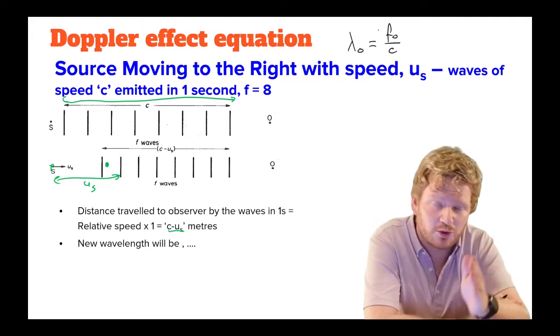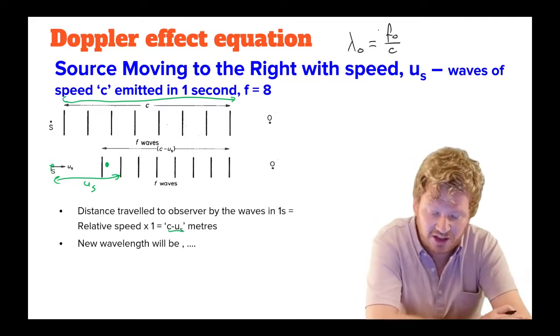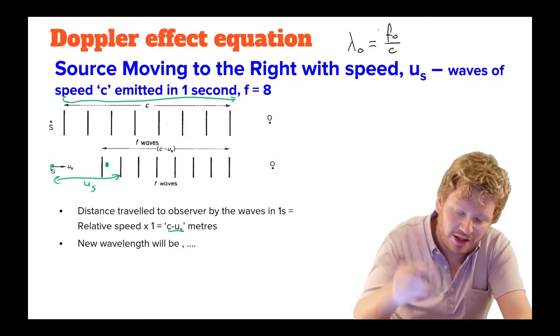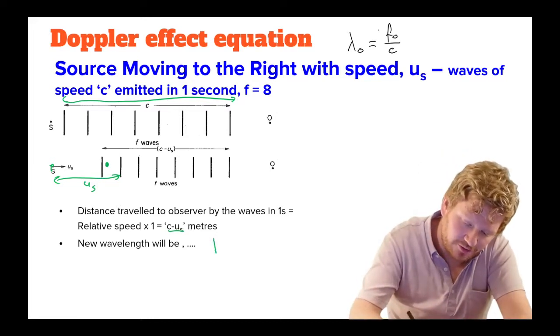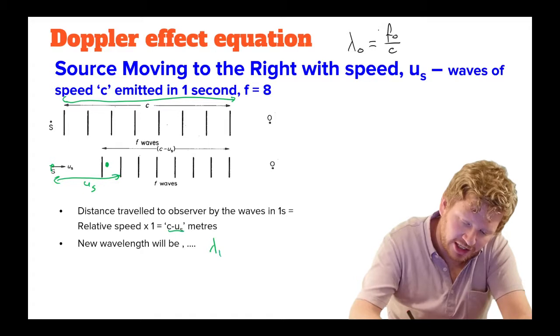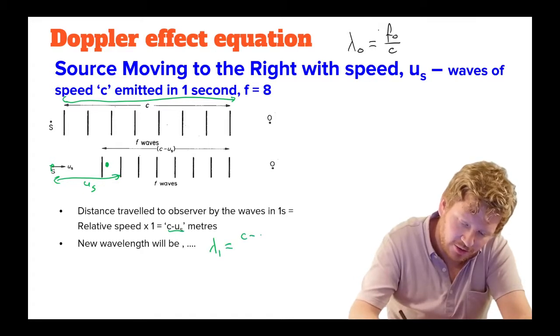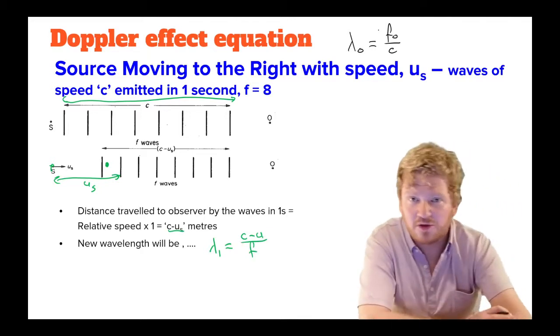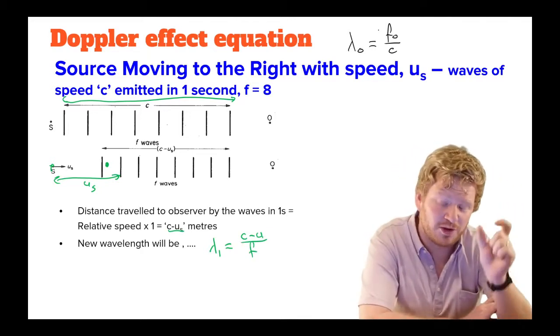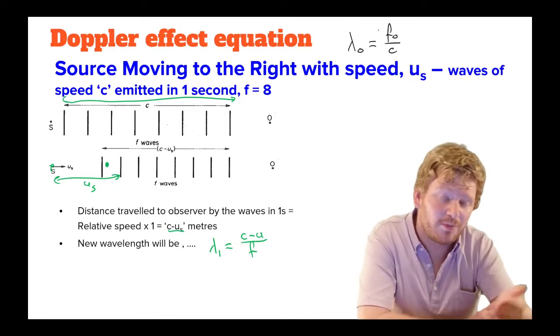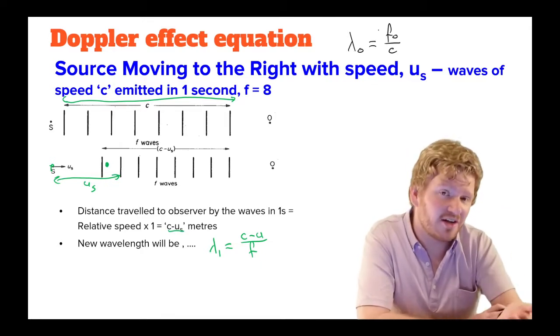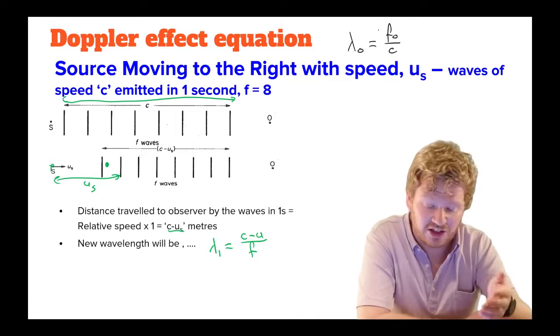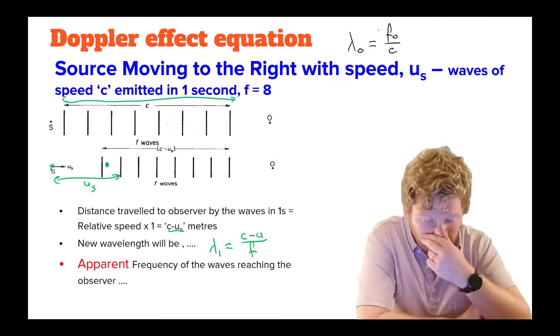So the actual distance between all of our waves will be c minus u. Now that means that our new wavelength, which I'm going to call lambda 1, that will be equal to c minus u over f, because I want the wavelength which is the distance between one of my waves. In this case, I've got eight, so I'll be dividing it by eight. But I can generalize that and say it is just c minus u over f.